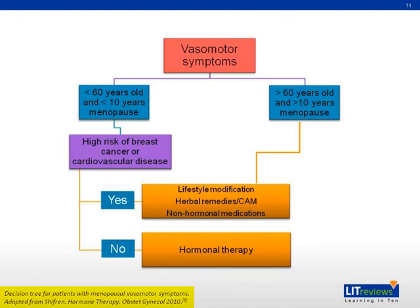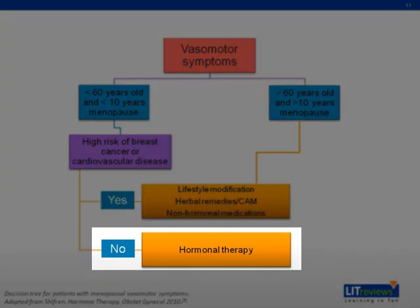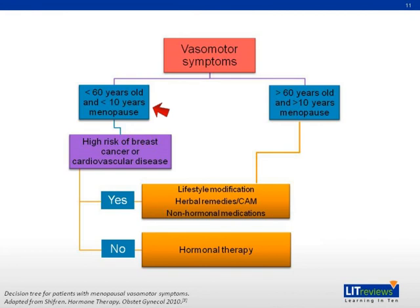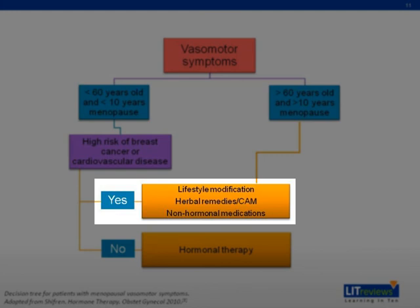This is a decision tree for patients with menopausal vasomotor symptoms. As you can see, hormonal therapy is not frequently recommended, and is only reserved for patients that are less than 60 years of age with less than 10 years of menopause, who are at low risk of breast cancer or cardiovascular disease. For all other patients that are high risk and elderly, lifestyle modification, herbal remedies, CAM, and non-hormonal medications are the preferred choice.